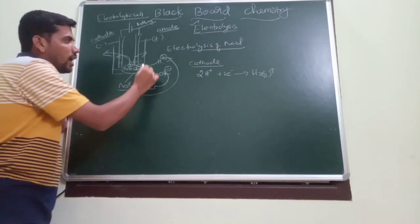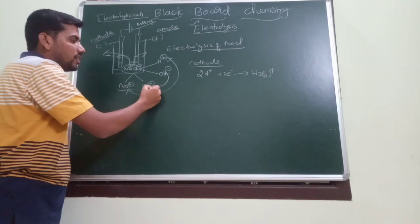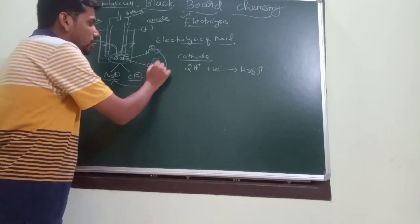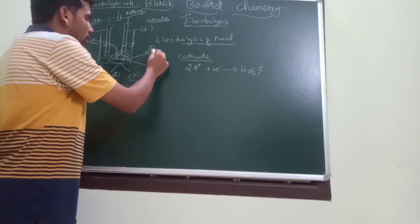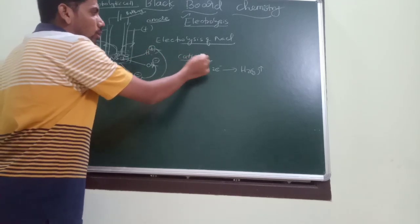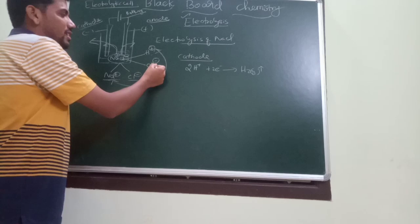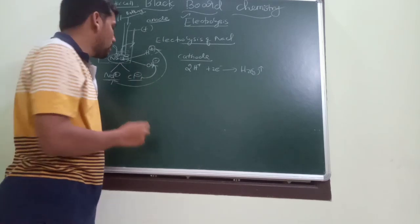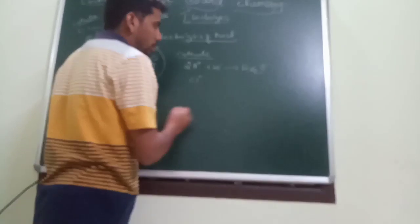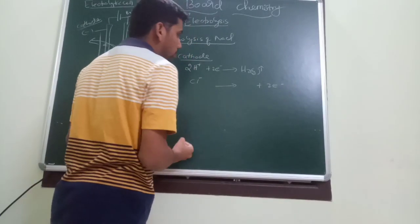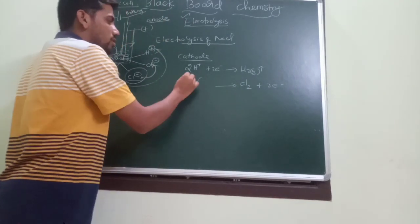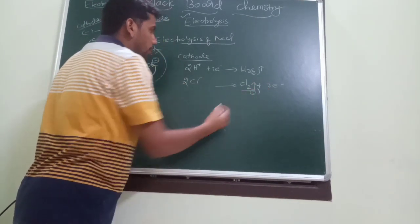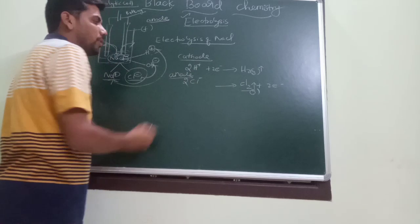At the anode: the negative charged particles Cl- and OH- move towards the anode. Among these, Cl- has the lower discharge potential. Cl- loses 2 electrons: 2Cl- → Cl2. So Cl2 gas is liberated at the anode during the electrolysis of NaCl solution.